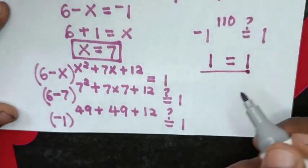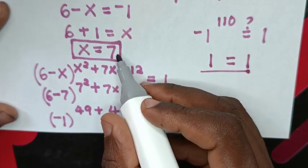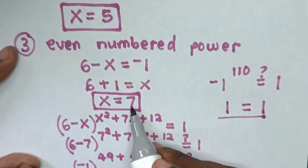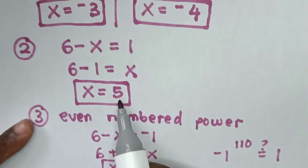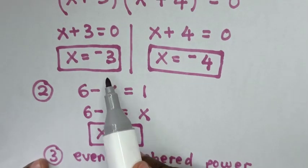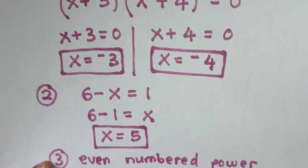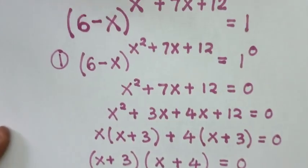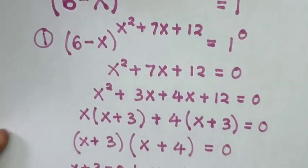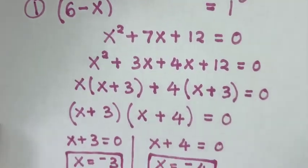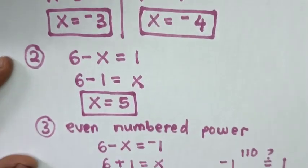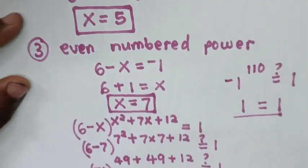So the left side and right side are equal, confirming x equals 7 is valid. So the four values of x are: the first value, the second value, the third value, and the fourth value. Don't forget these steps. Subscribe to my channel and see you in the next video. Bye-bye.